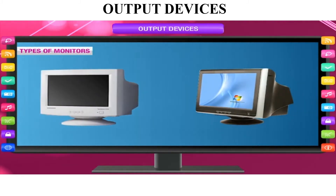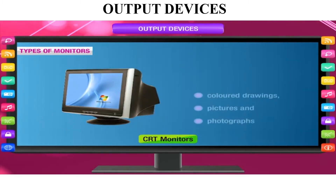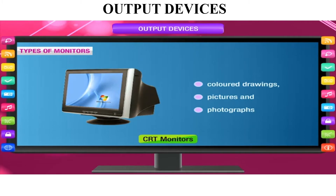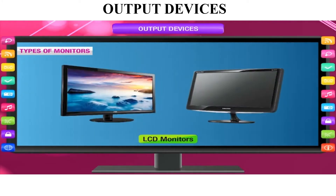The monitor is a main output device and you can see the desktop screen on it. There are types of monitors. The CRT monitor — Cathode Ray Tube — is one type. It shows color drawings, pictures, and photographs. In our school, CRT monitors are no longer available.